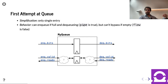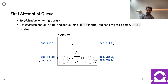If you remember from our discussion of the Chisel standard library queue, there were pipe and flow parameters. Pipe being if you can enqueue into a full queue if it's also being dequeued at the same time. In this case, we'll support that. The flow parameter — the ability to bypass the entire queue combinationally if it's empty — we're not going to support at all today.